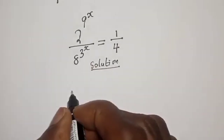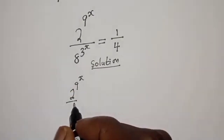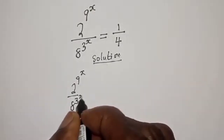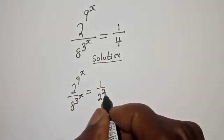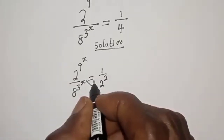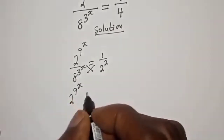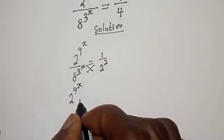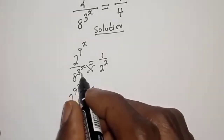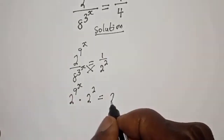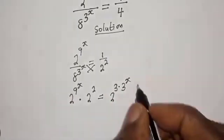We have 2 raised to power 9 raised to power s, over 8 raised to power 3 raised to power s, is equal to 1 over 4, which can be written as 2 raised to power negative 2. Then let's cross multiply. This gives 2 raised to power 9 raised to power s, multiplied by 2 raised to power 2, is equal to 8 raised to power 3 raised to power s, which can be written as 2 raised to power 3, raised to power s.